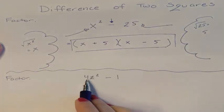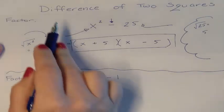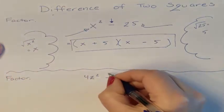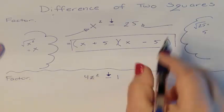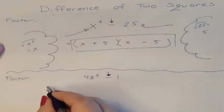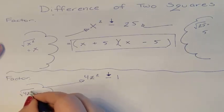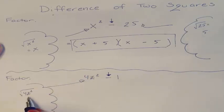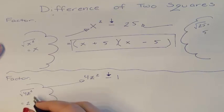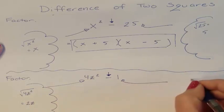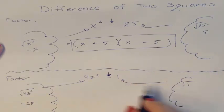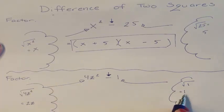So let's look at another one: 4z squared minus 1. The very first thing you have to look for is to make sure it's a difference. Do I have a subtraction problem? I do. So now I've got to make sure that there are actually two squares. Can I take the square root of 4z squared? The square root of 4 is 2. The square root of z squared is z. So I can take the square root of the front term. Can I take the square root of 1? The square root of 1 is 1. So I did have a difference and I do have two squares.